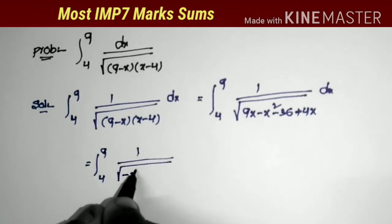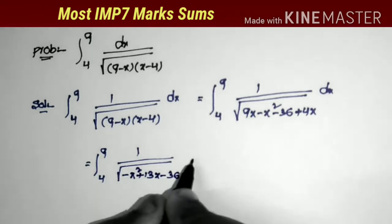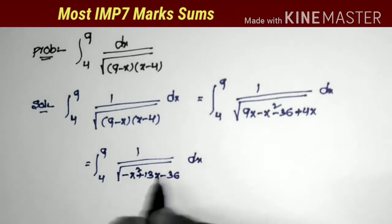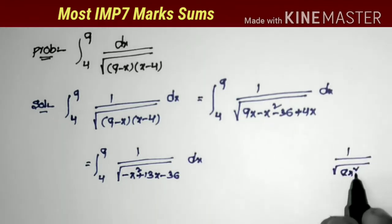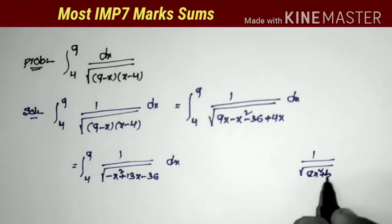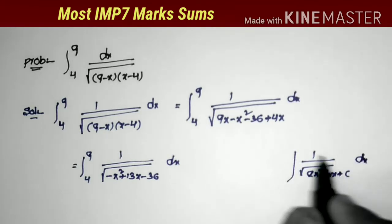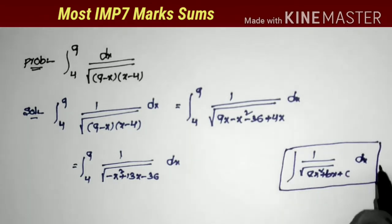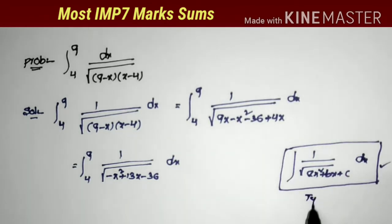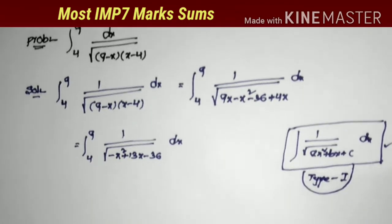This gives us integral from 4 to 9 of 1 by square root of (minus x squared + 13x minus 36) dx. Clearly this is in the form of 1 by square root of (ax squared + bx + c), which is the Type 1 problem of integration. We apply the same procedure to solve this type of problem.